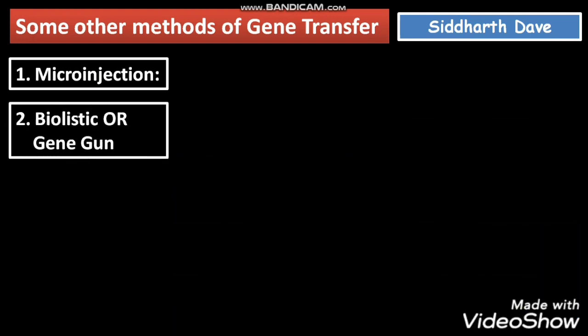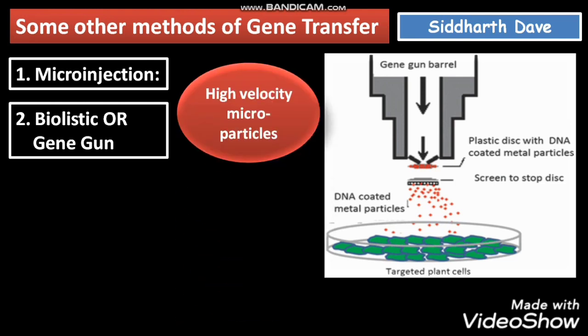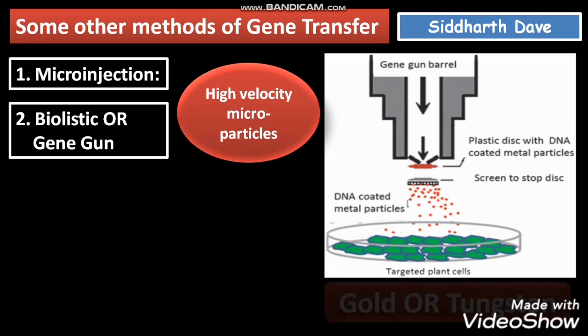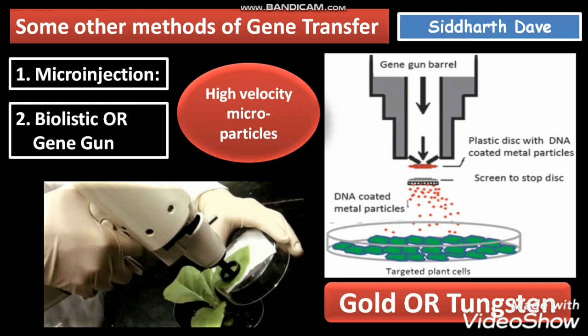The second technique is called the biolistic or gene gun method. In this method, as you can see in the figure, a gene gun barrel is used. You take high velocity micro particles of gold or tungsten, and coat your gene of interest — the DNA you want to transfer into the target cell — onto these particles. You then place them in the gene gun barrel and bombard this DNA-coated high velocity micro particles of gold or tungsten into your targeted plant cell.